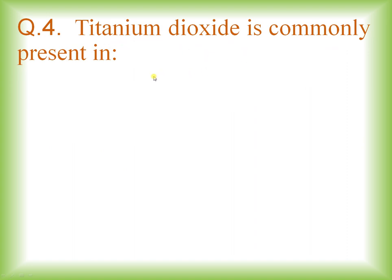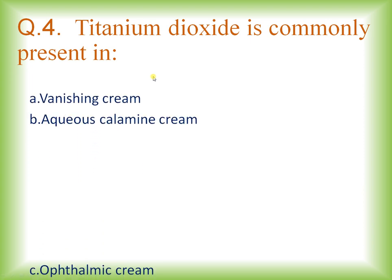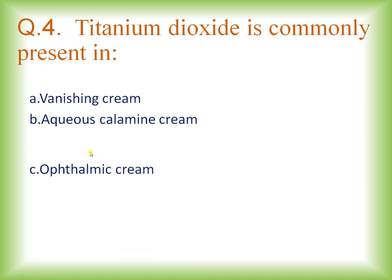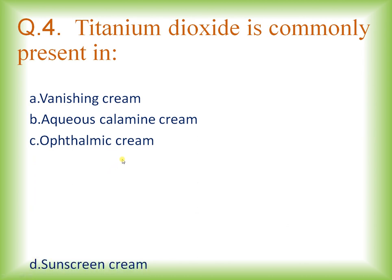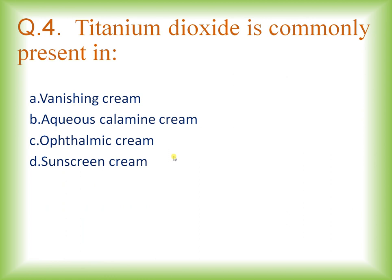Question number four: titanium dioxide is commonly present in which formulation — vanishing cream, calamine cream, ophthalmic cream, or sunscreen cream? The correct answer is option D, sunscreen cream. Titanium dioxide is a commonly employed agent in sunscreen creams.